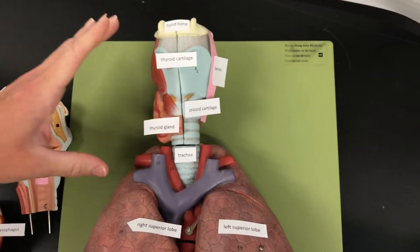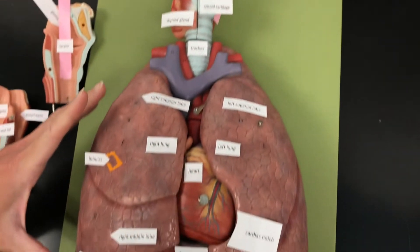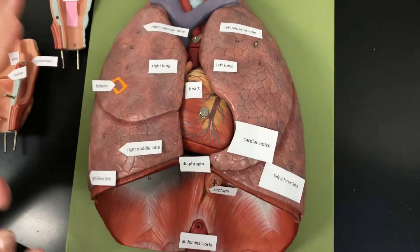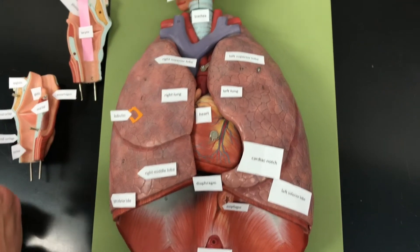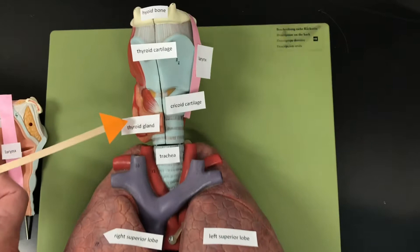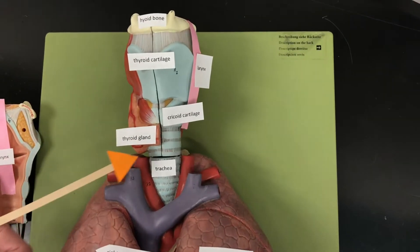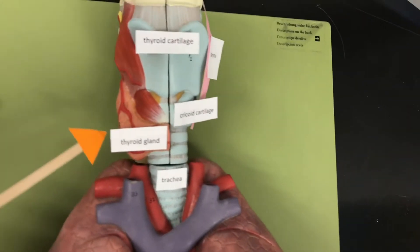This is a tour of the cervical region and the thoracic cavity involving the respiratory system. So up here in the cervical region we have the thyroid gland, remember that from the endocrine gland.